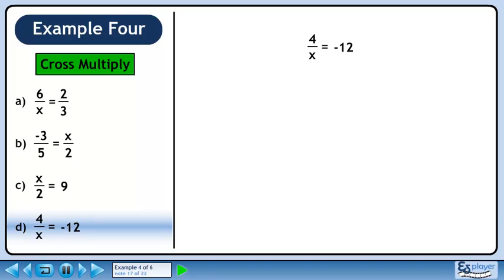In part d, we have 4 over x equals minus 12. Write minus 12 over 1 so we have fraction equals fraction. Multiply diagonally to get 4. Multiply diagonally the other way to get minus 12x.